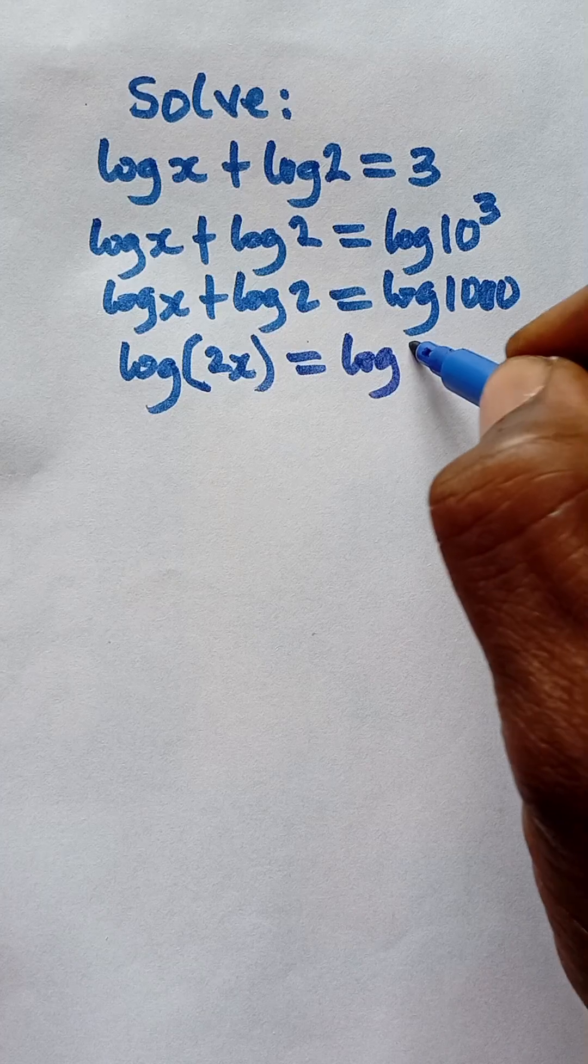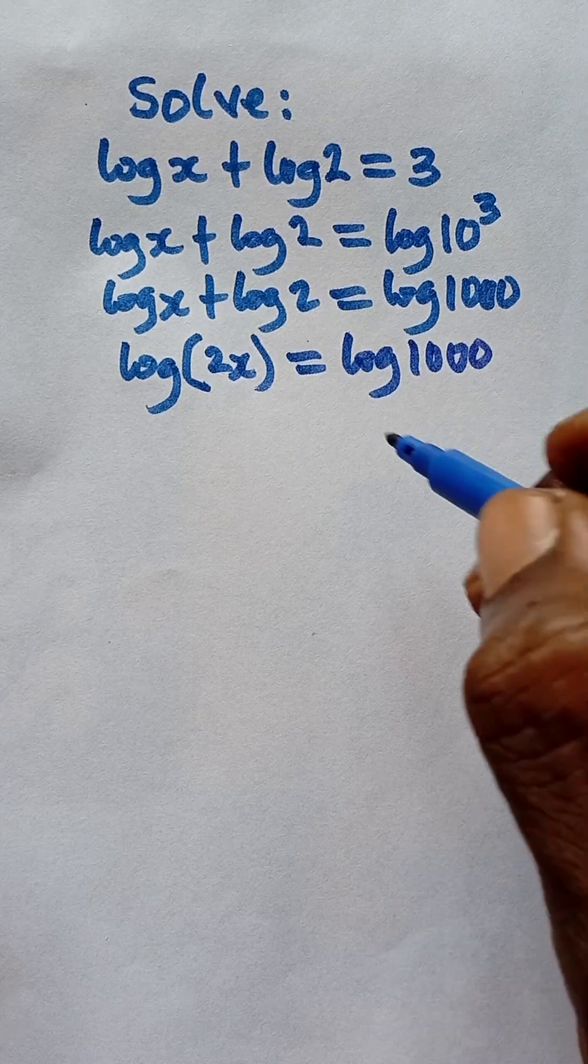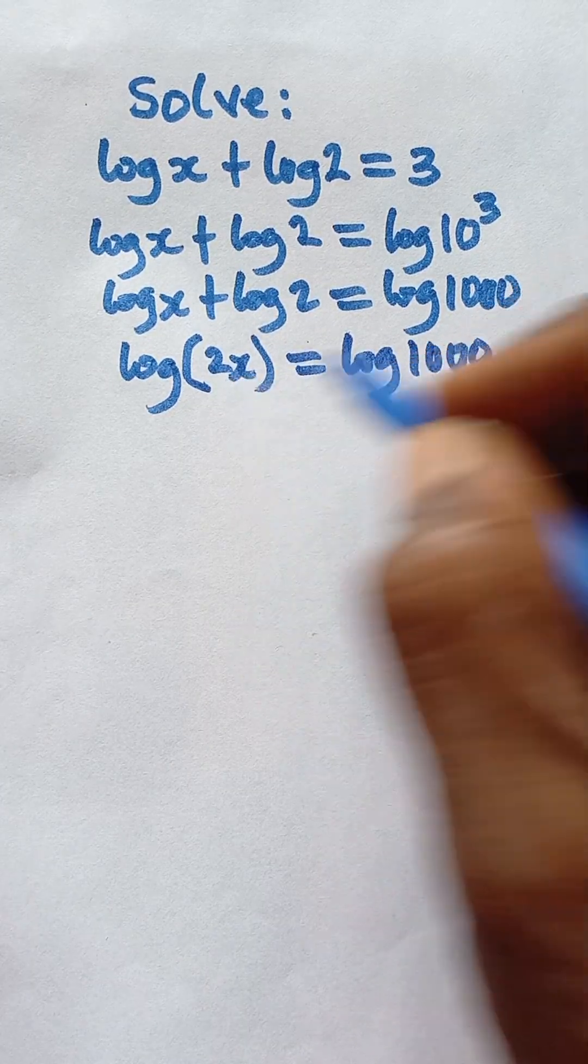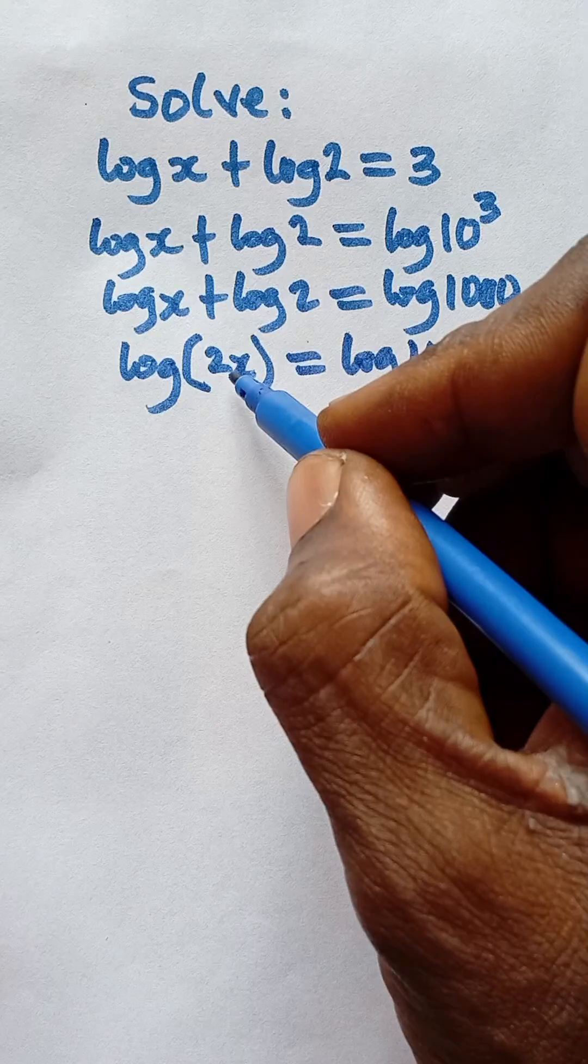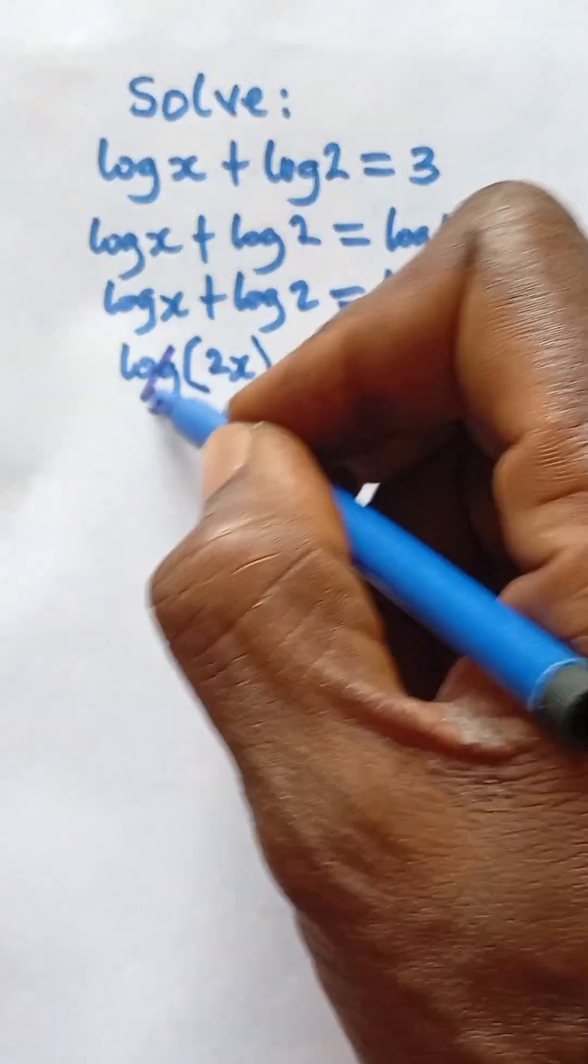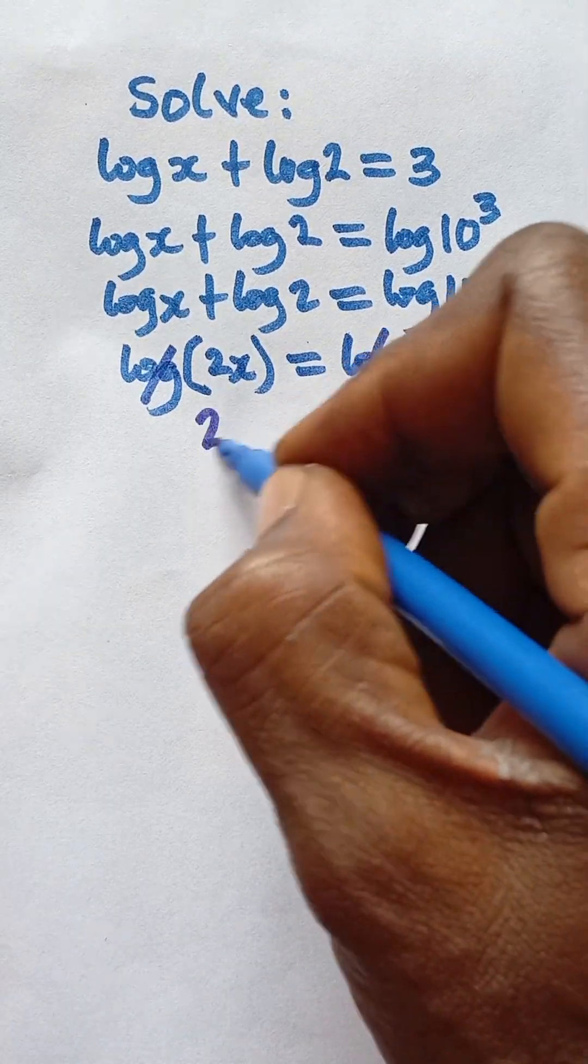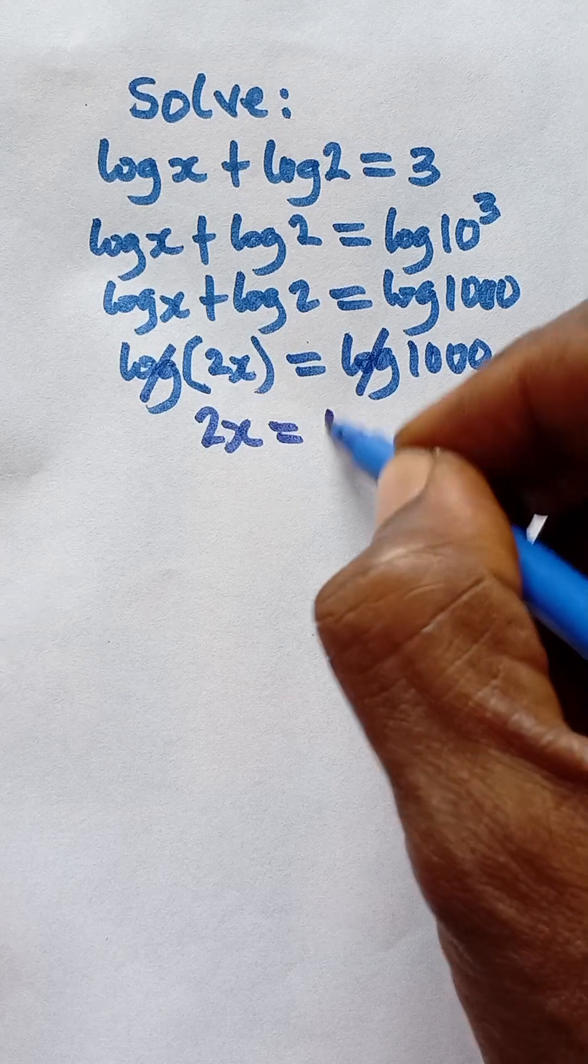And that is equal to log 1000. Now since this is 2x and this is 1000, it shows that these two values are equal. So we can just cancel out the log and say 2x is equal to 1000.